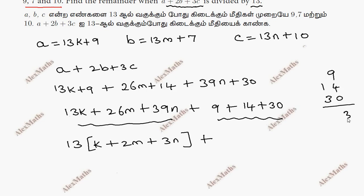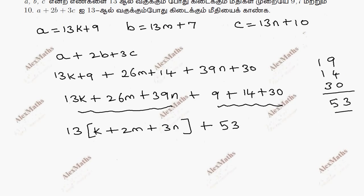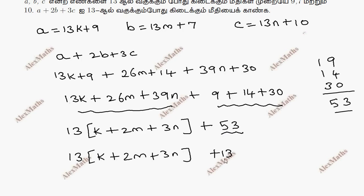Adding the constants: 9 plus 14 plus 30 equals 53. Now, 53 equals 52 plus 1, and 52 is a multiple of 13, so we write it as 13 times 4, plus 1.